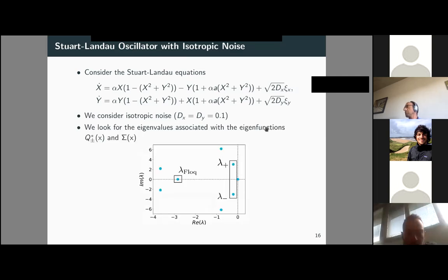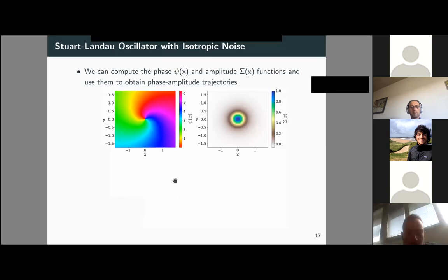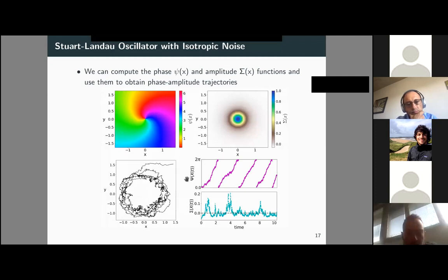The procedure is always the same: build the L† operator, diagonalize it, and focus on the eigenfunctions associated to the eigenvalues of interest — the complex one with the least negative real part, and the purely real one with the smallest real part. We then have phase and amplitude functions that can be used to compute phase-amplitude descriptions of individual stochastic trajectories, shown here alongside the corresponding phase-amplitude portrait.